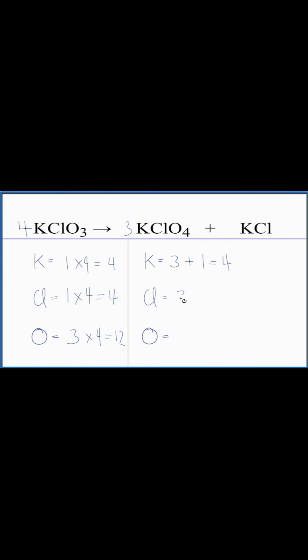One times three. That gives me three. Plus the other chlorine here. Chlorines are balanced. Four times three. That gives me twelve. Oxygens are balanced.